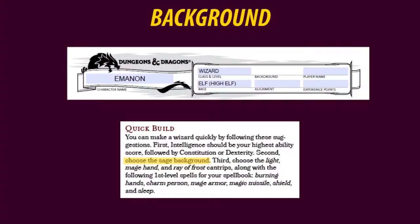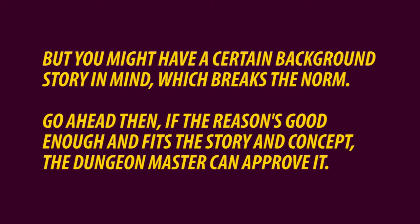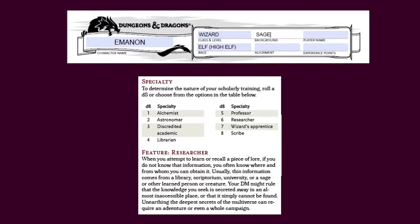Now it's time to decide upon a background, which gives you a package of skills, tools, languages, and a starting sum of money. As a wizard, a background of a sage is recommended and is probably most logical. As a sage, I need to decide a specialty for my character. This can be done by rolling a d8 or by simply choosing one yourself. I'm going to choose: let's go with Researcher.